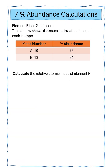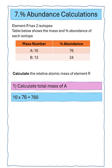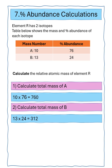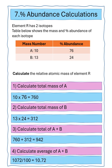Question seven says element R has two isotopes. The table below shows the mass and percentage abundance of each isotope. We've got to calculate the relative atomic mass of element R. Isotope A has a mass number of 10 and abundance of 76, giving a total of 760. Isotope B has a mass of 13, abundance 24, giving a total of 312. Adding the two totals gives 942. Dividing by 100 gives an answer of 10.72.